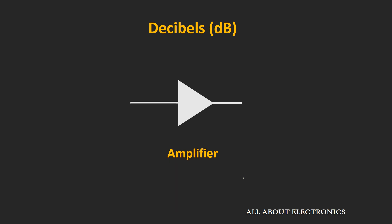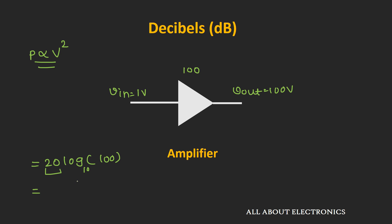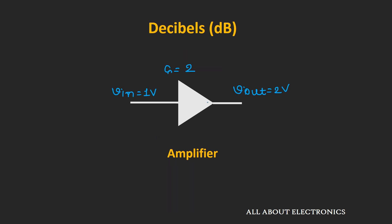Now let's talk about voltage gain. Say we have an amplifier with a voltage gain of 100 — applying 1 V input gives 100 V output. The gain in decibels is represented as 20 log(100), which equals 40 dB. Likewise, a gain of 1000 gives 60 dB. If the system provides a gain of 2, then in decibels it is 20 log(2), which works out to 6 dB.